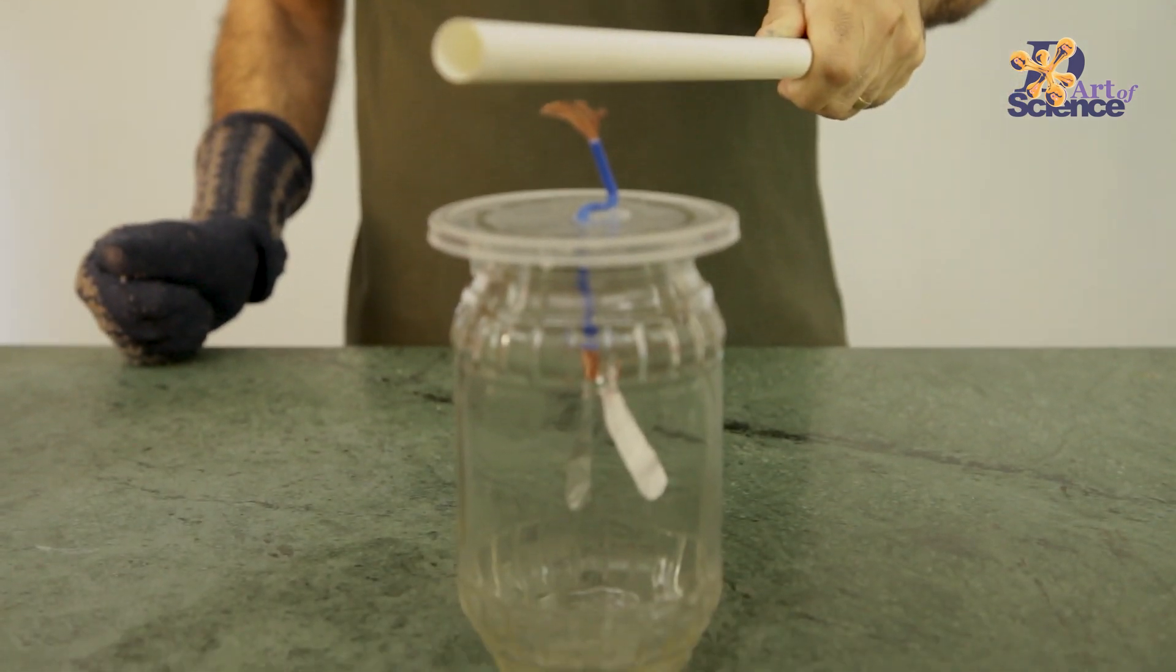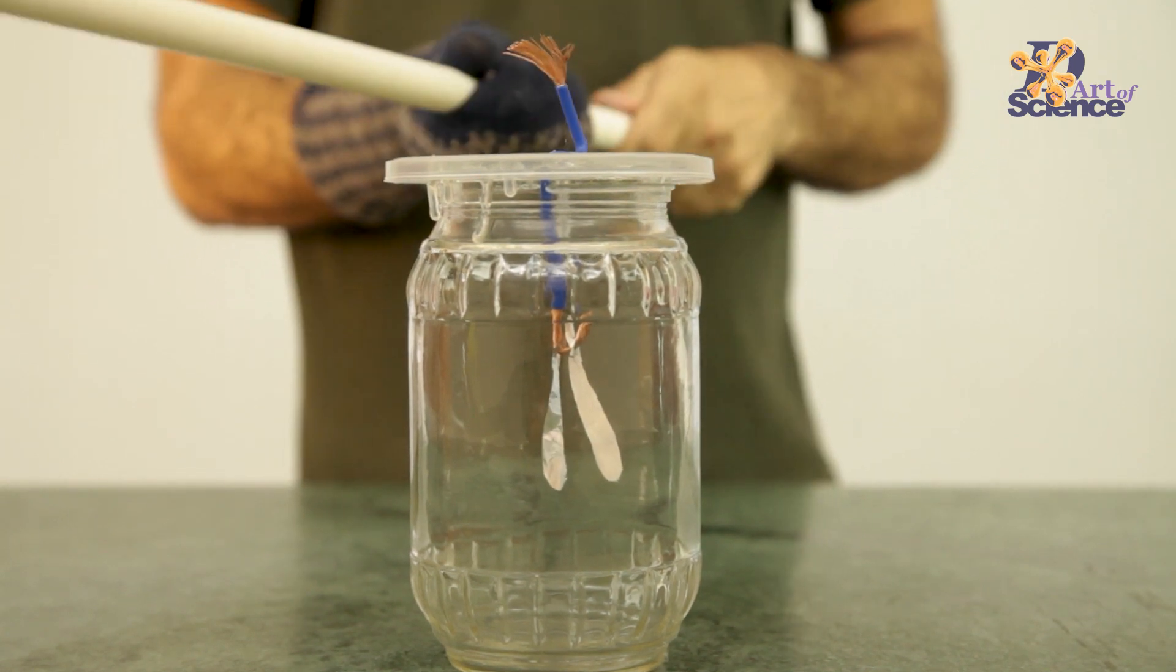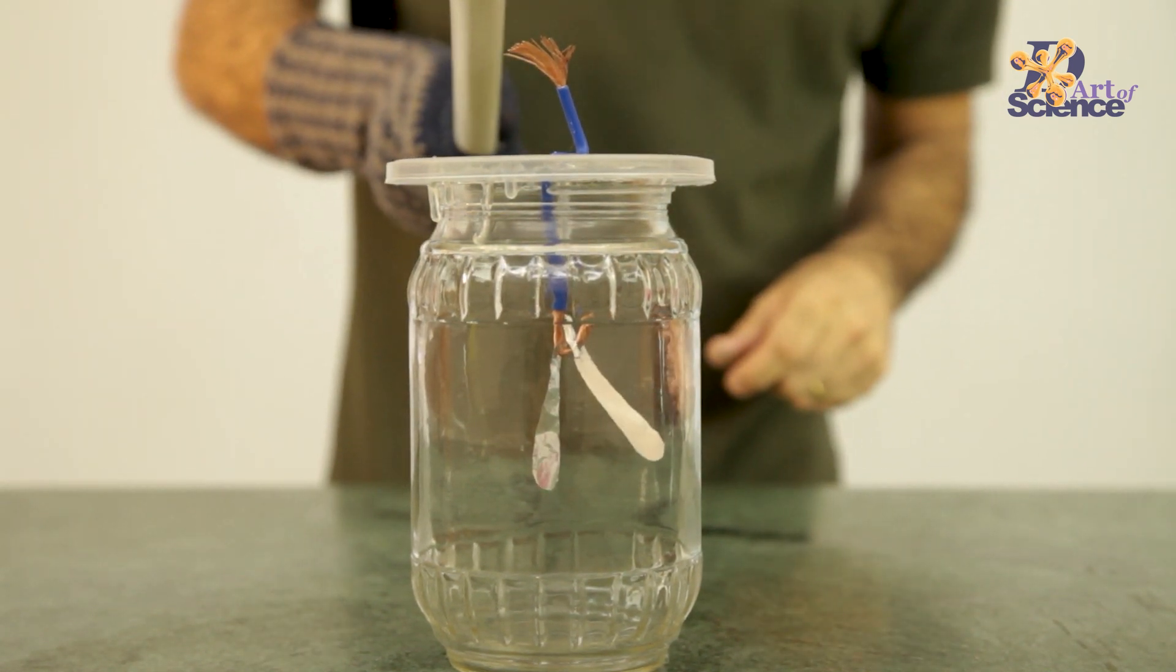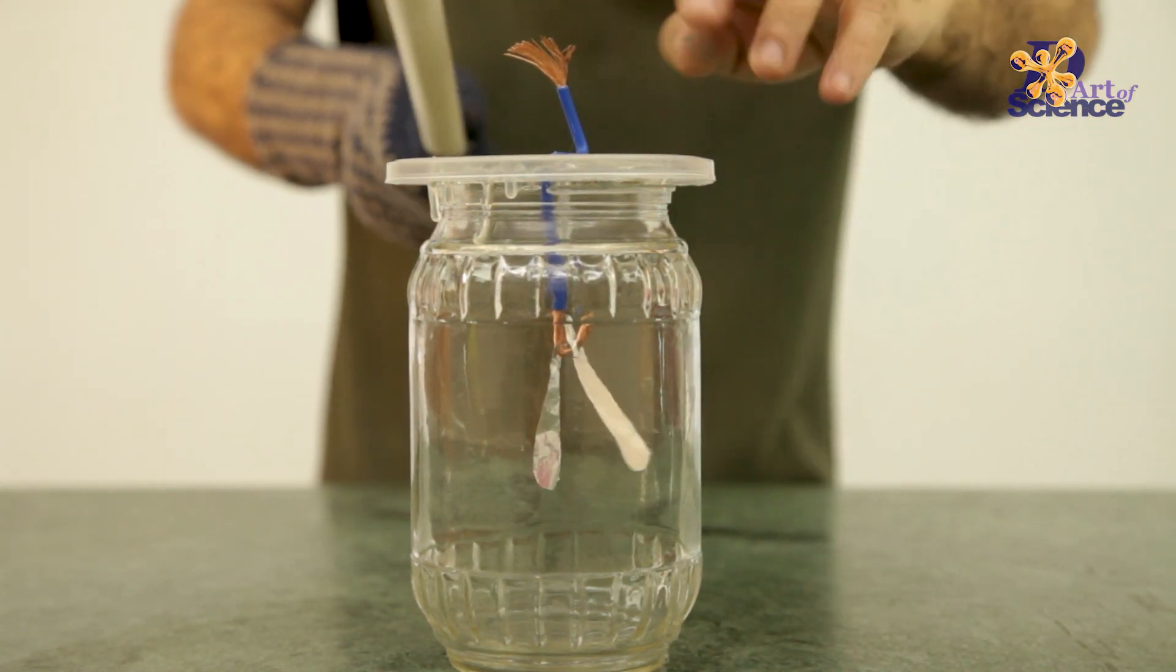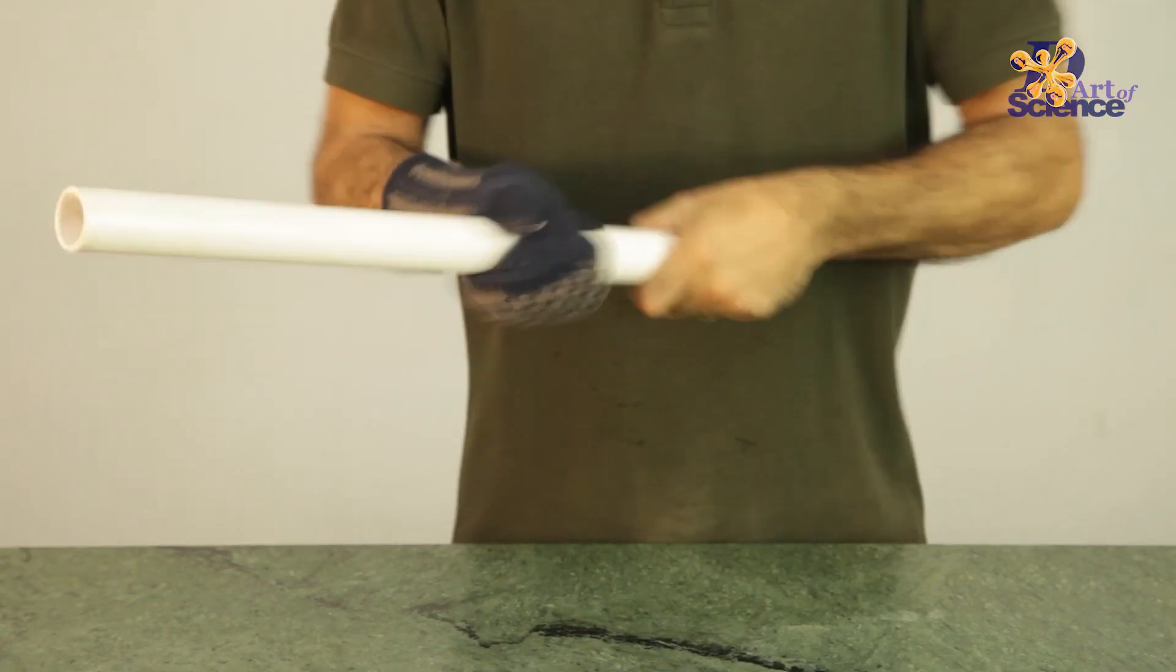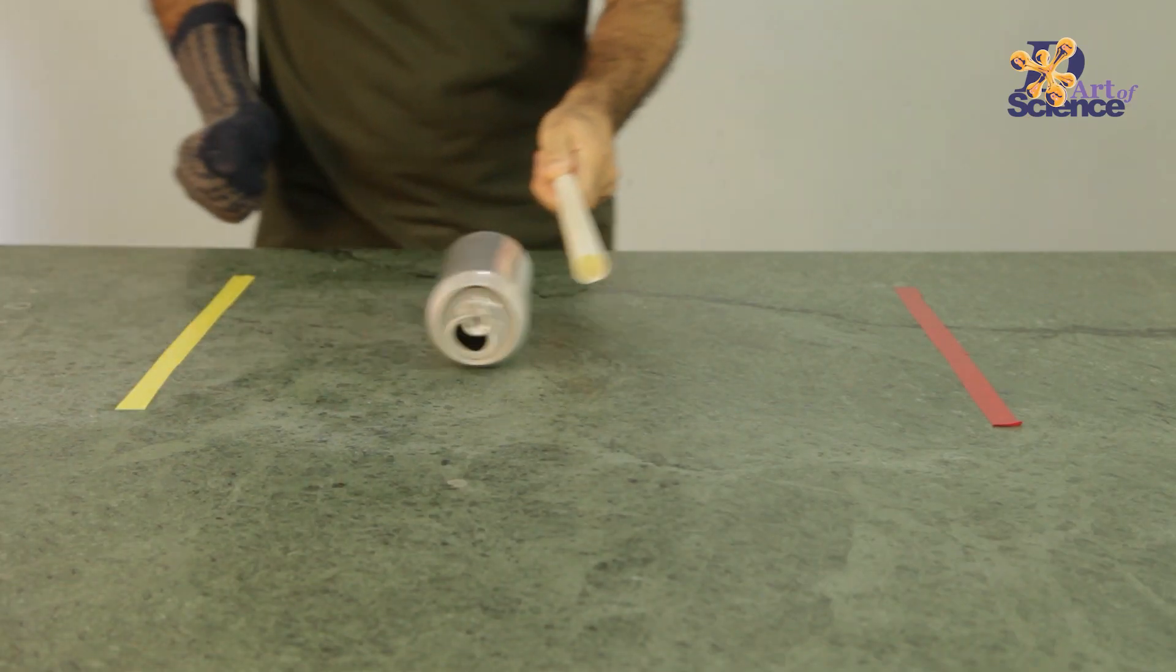This is an electroscope and it's another fun DIY related to static electricity that you can make at home. You can check it up here in the link above.